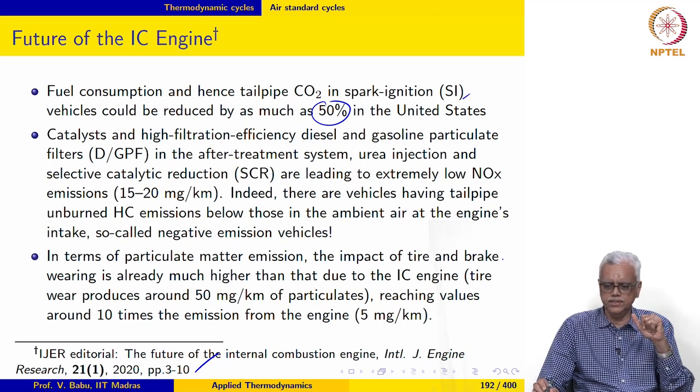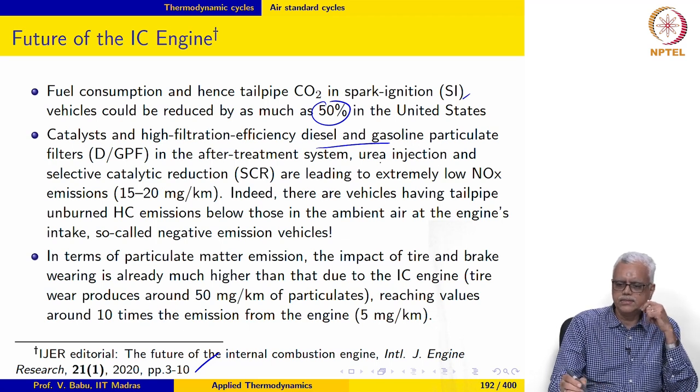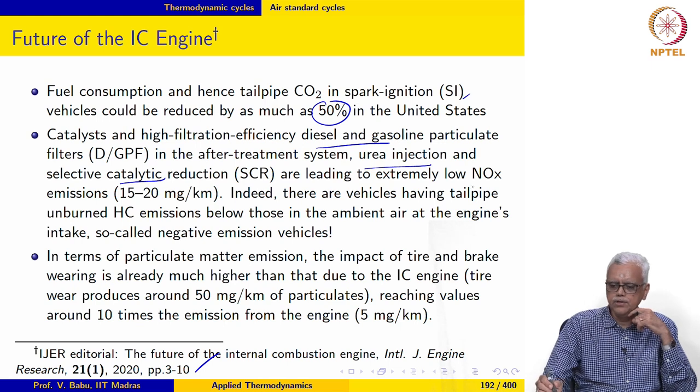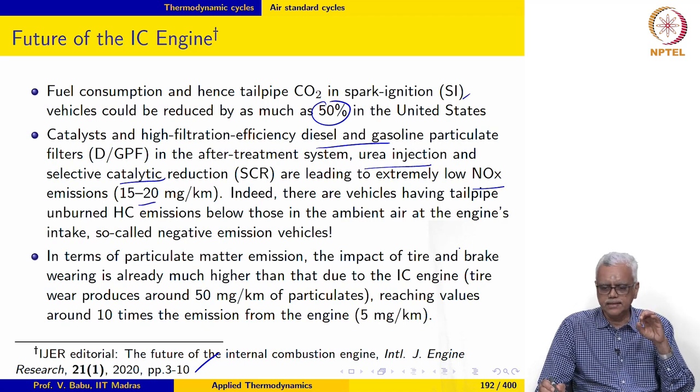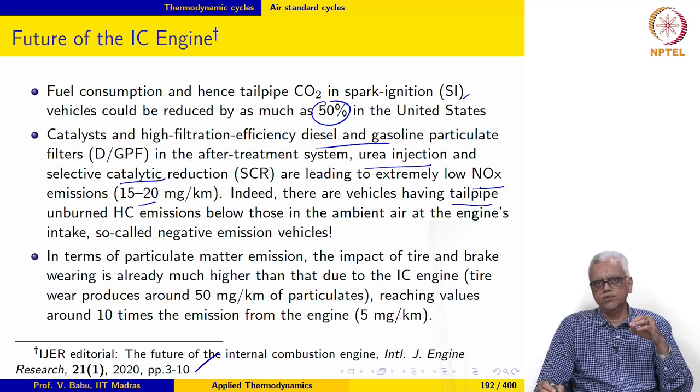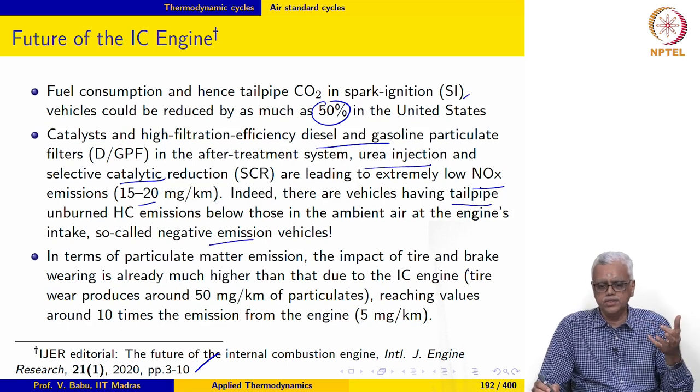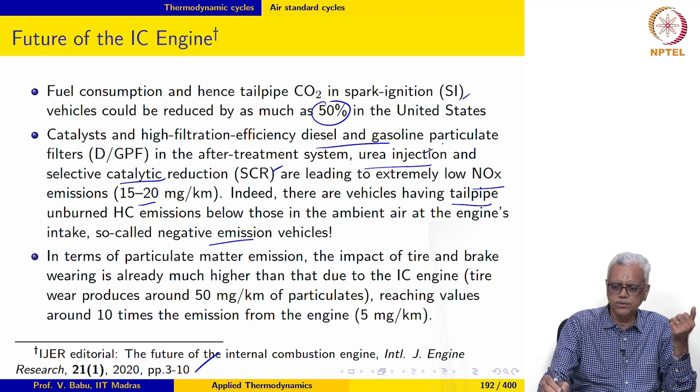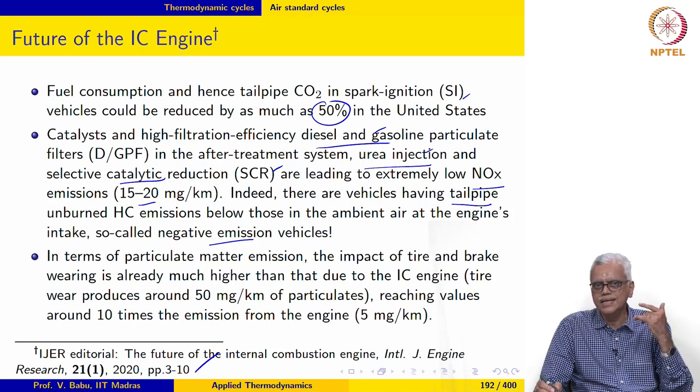In the case of compression ignition engines, notice that high filtration efficiency in diesel and gasoline engines, particulate filters, urea injection and selective catalytic reduction can reduce to extremely low NOx, that is 15 to 20 milligrams per kilometer. In fact, there are vehicles which have tailpipe unburned hydrocarbon emissions which is actually less than the hydrocarbons present in the ambient air. In other words, these engines take in air which has a higher amount of hydrocarbon than what comes out of the exhaust. They are actually negative emission vehicles. The technology of selective catalytic reduction, urea injection and filtration have become so good that for hydrocarbon emissions some of these vehicles are actually emissions negative.